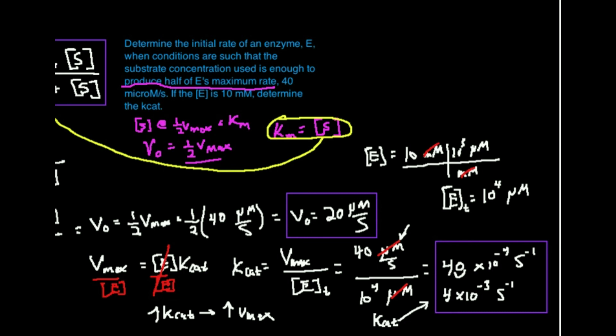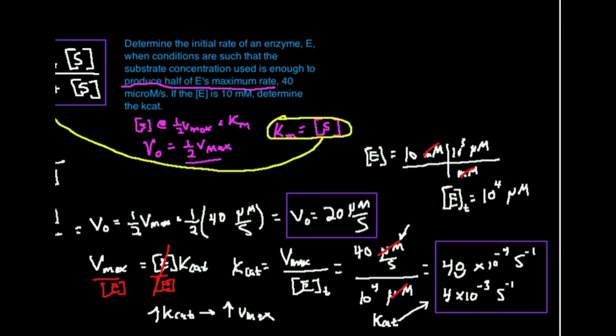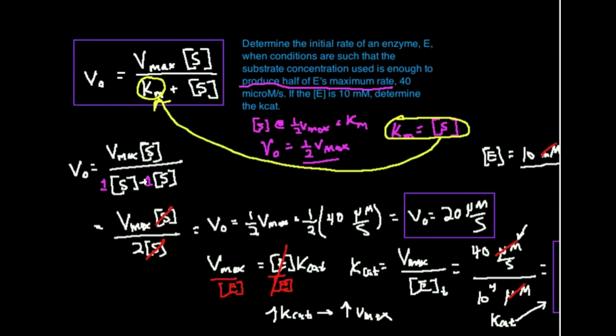Hopefully this made sense and gave you an idea of how to calculate the rate and then Kcat when you're at half of the enzyme's maximum rate. Keep in mind: when you're at half of the enzyme's maximum rate, that's when Km equals the substrate concentration — so on an exam they can do something sneaky like that and expect you to calculate it. Make sure to like this video and subscribe to the channel for future videos and notifications. Thank you very much.